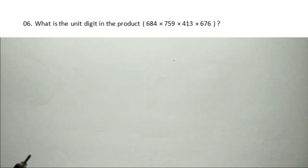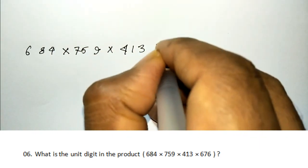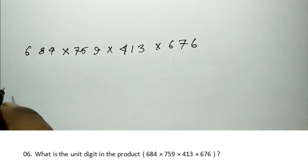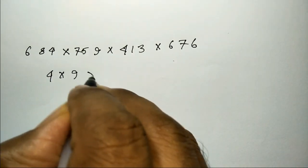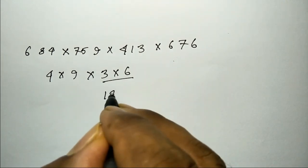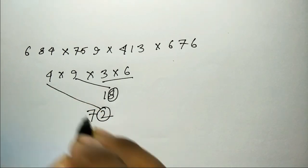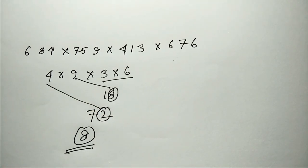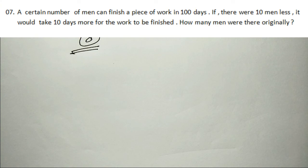What is the unit digit in the product of 684 into 5759 into 413 into 676? The unit digit of each number: 4, 9, 3, 6. The total unit digit calculation: 4 times 9 equals 36 — unit digit 6; 6 times 3 equals 18 — unit digit 8; 8 times 6 equals 48 — unit digit 8. The answer is 8.